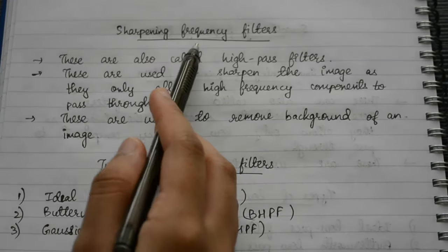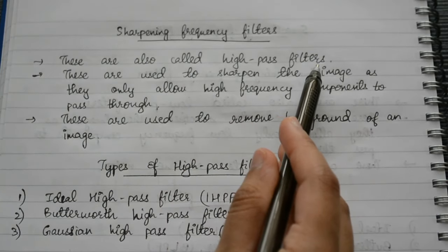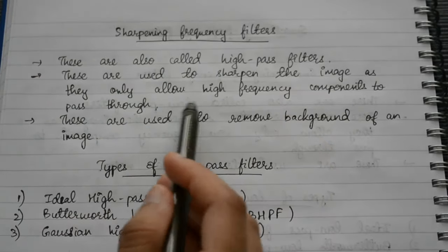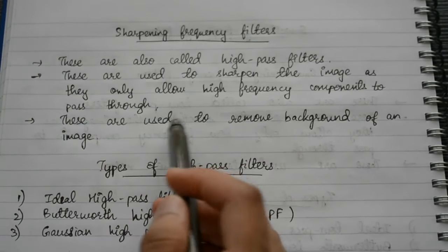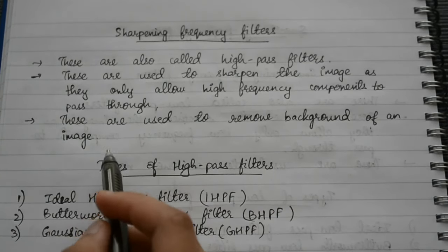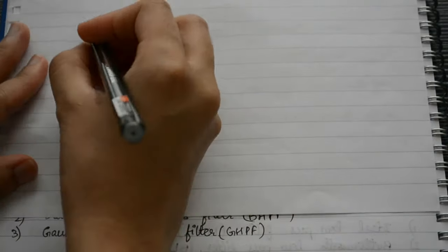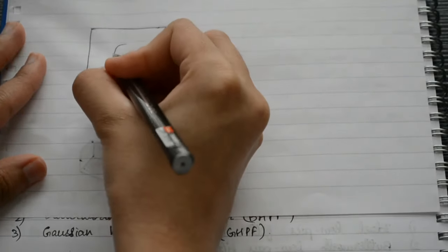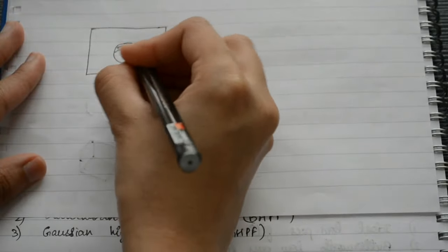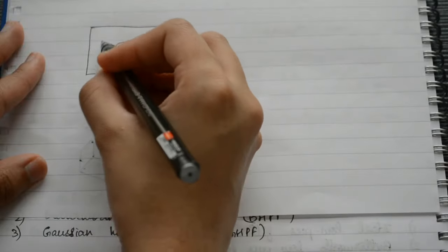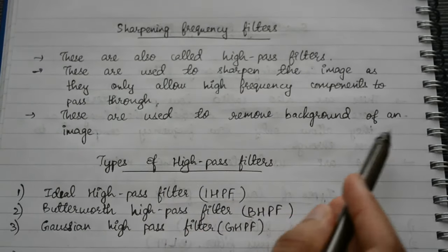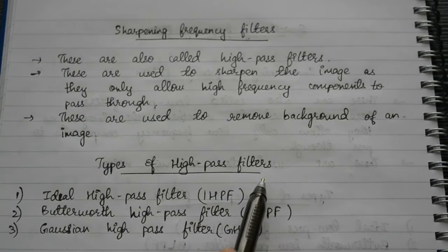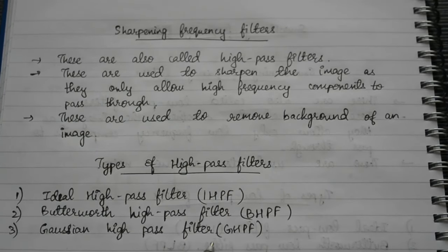Now let's look at sharpening frequency filters, also called high pass filters. These are used to sharpen the image as they only allow high frequency components to pass through — they remove lower frequency components. They are used to remove the background of an image, since the main object is usually of higher frequency and the background is of lower frequency. The types are ideal, Butterworth, and Gaussian high pass filters.